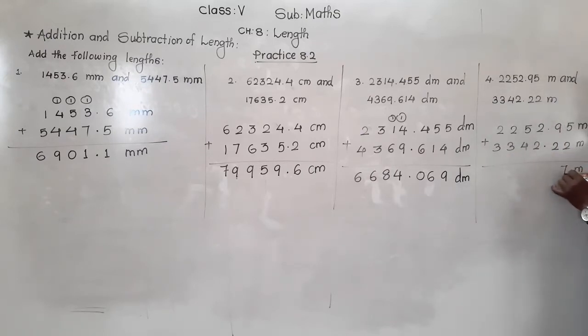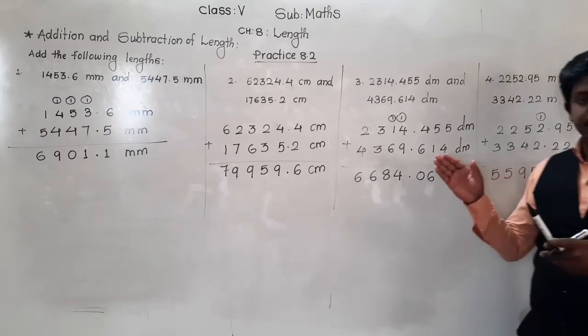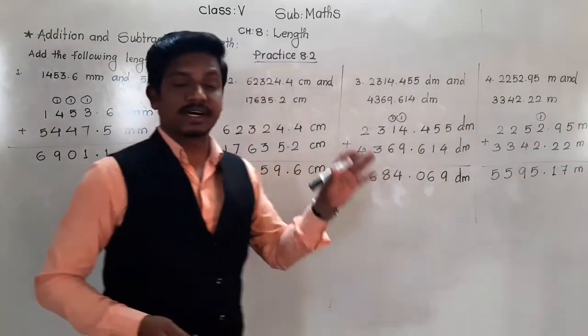Add: 5 plus 2 is 7. 9 plus 2 is 11, 1 will come down, 1 will be carried here. Then decimal point. 2 plus 2 is 4, and 1 is 5. 5 plus 4 is 9. 2 plus 3 is 5. And 2 plus 3 is 5.